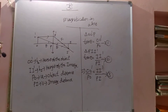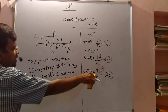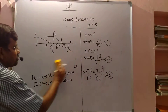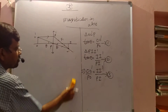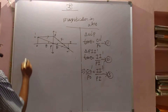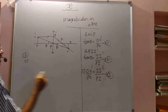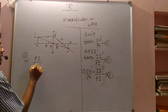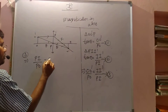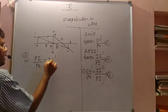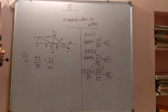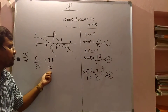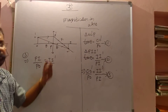Now, II' is the height of the image. Rearranging, PI divided by PO equals II' divided by OO' — that is, height of the image divided by height of the object. That ratio is called magnification.